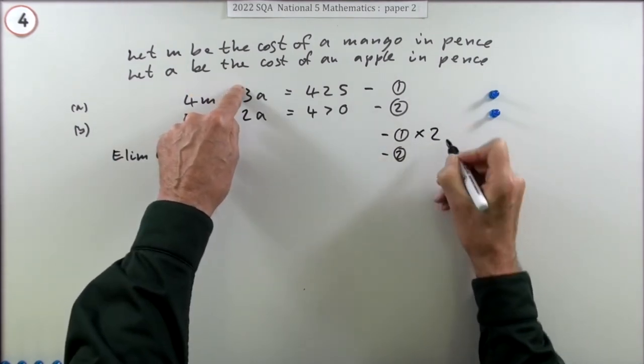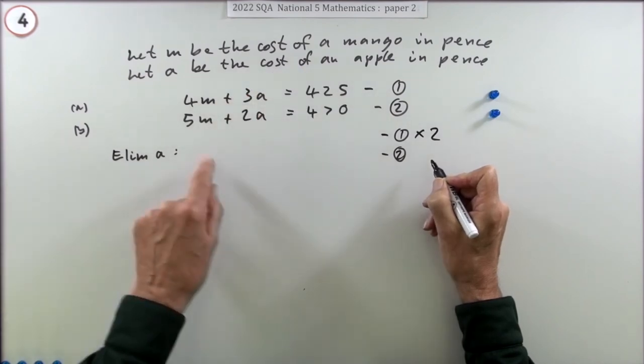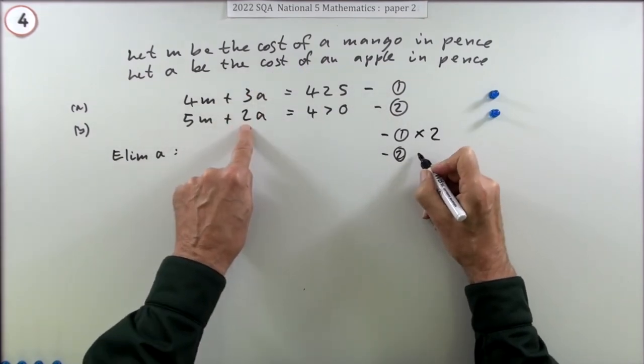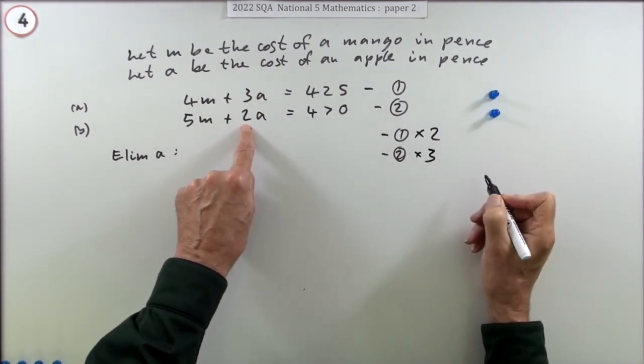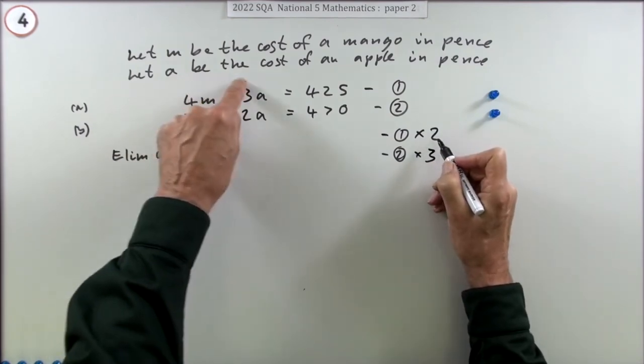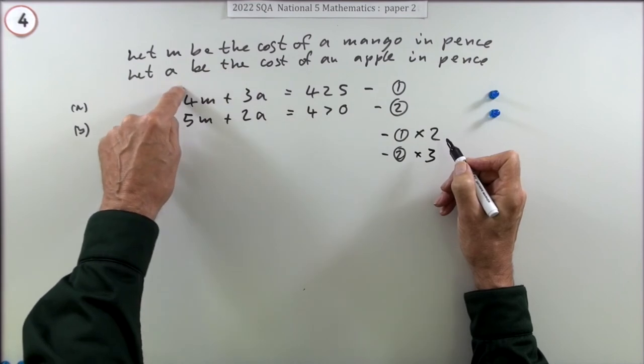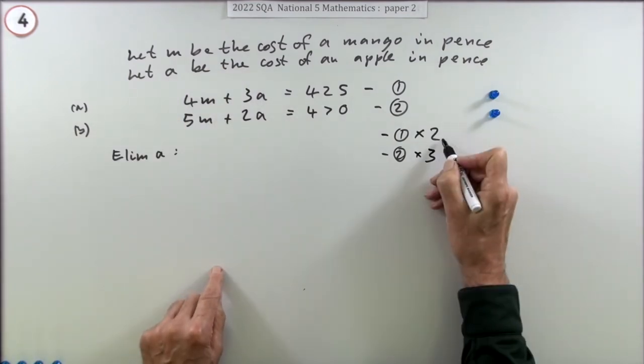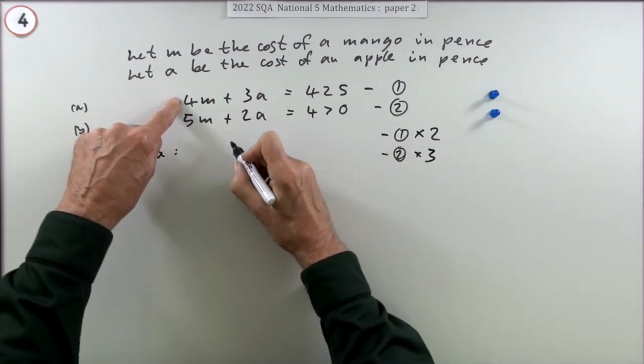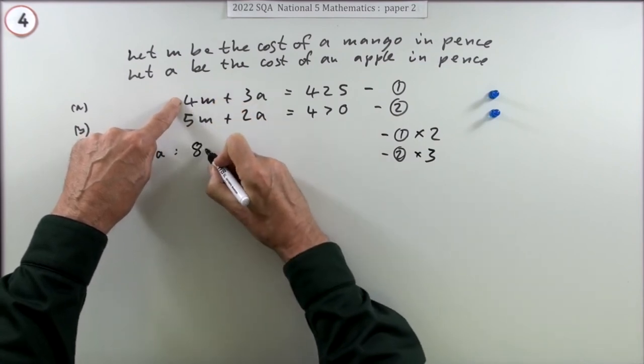In the first equation I could get a 6 there if I doubled everything, and in this equation I could get a 6 if I tripled everything. That means doubling every single thing, not just the a, because it wouldn't be balanced if you only doubled that amount.